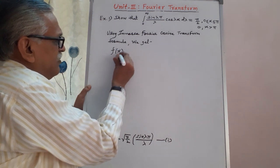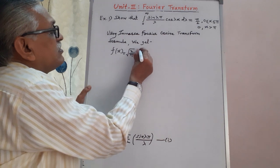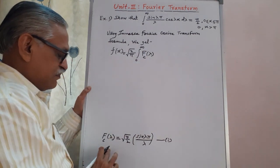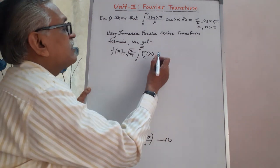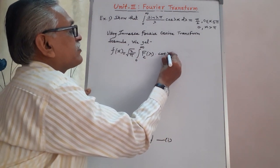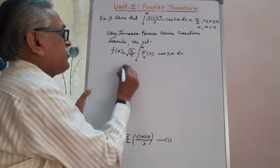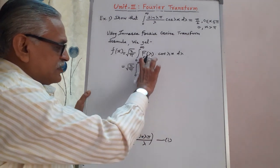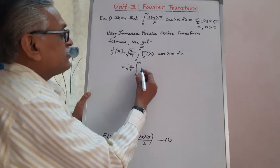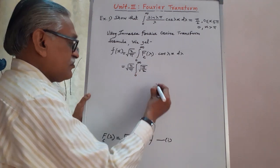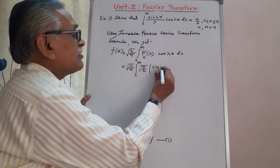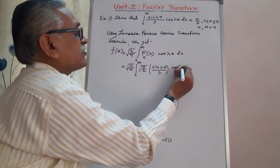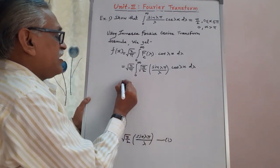Using the inverse Fourier cosine transform formula, f(x) = √(2/π) × integration from 0 to infinity of Fc(λ) × cos(λx) dλ. It equals √(2/π) as it is, substituting the value of Fc(λ) from equation 1 as √(π/2) × sin(λπ)/λ.